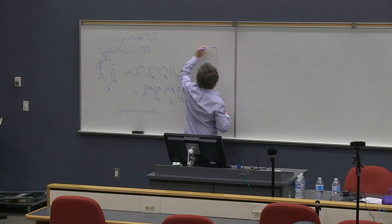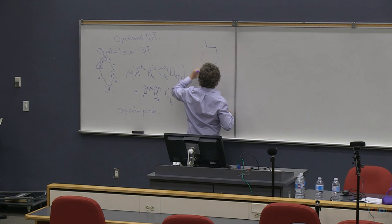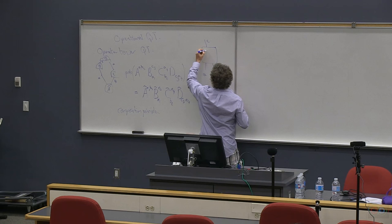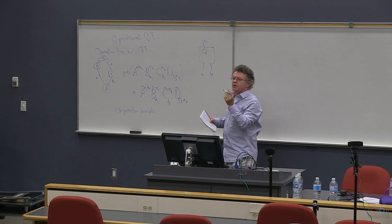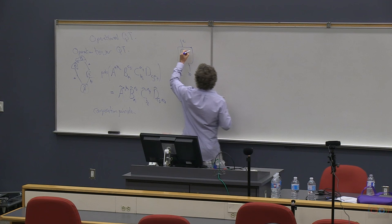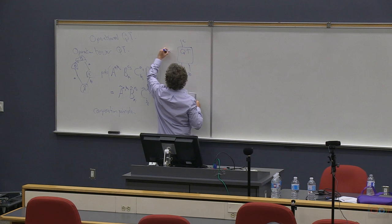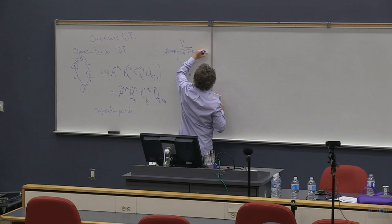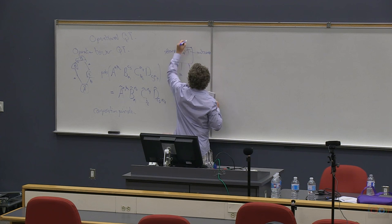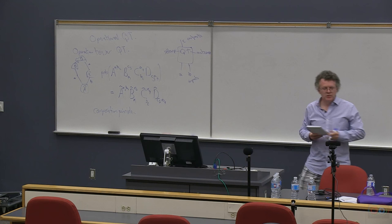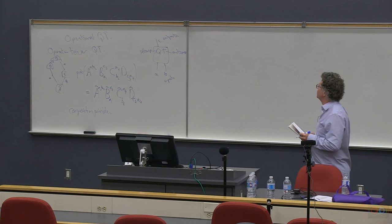The composition principle says it should be possible to write down the calculation for a physical situation as a mathematical expression that has the same compositional structure as the thing it's a calculation for. The boxes have various inputs and outputs, and you can also imagine they have some settings — a knob you can adjust — and outcomes, like a needle whose position you read off a scale.